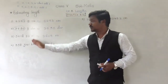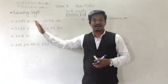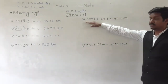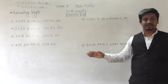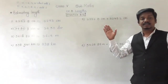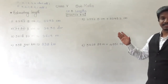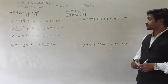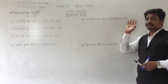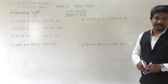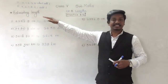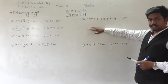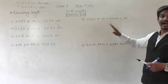These were the first four questions where we rounded off and estimated given lengths to the nearest whole number. Now in the next questions, we have to do addition and subtraction — 'estimate the sum and difference of the length.' Here also, two lengths are given. We will first estimate both lengths to the nearest whole number, and then add or subtract them.